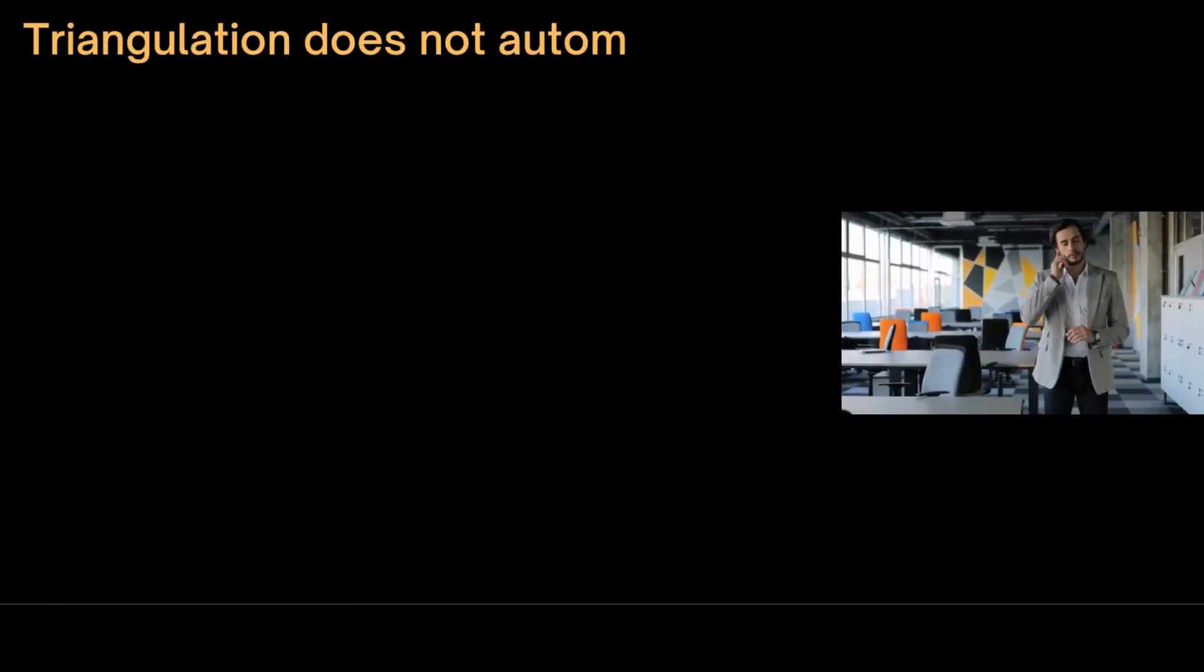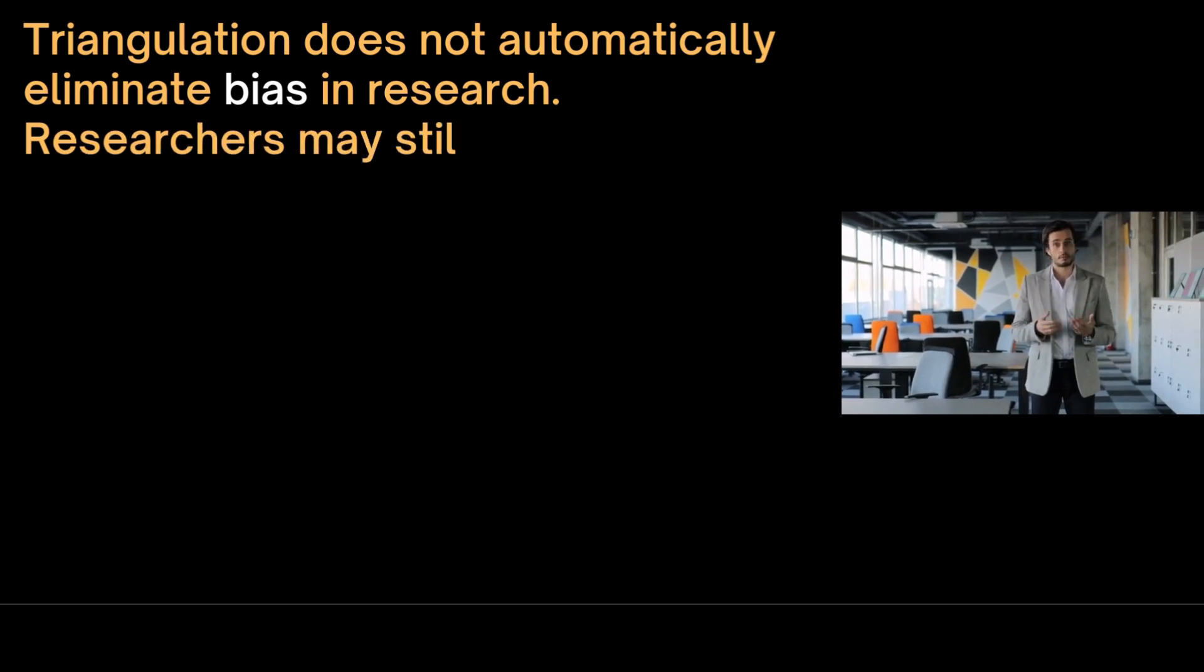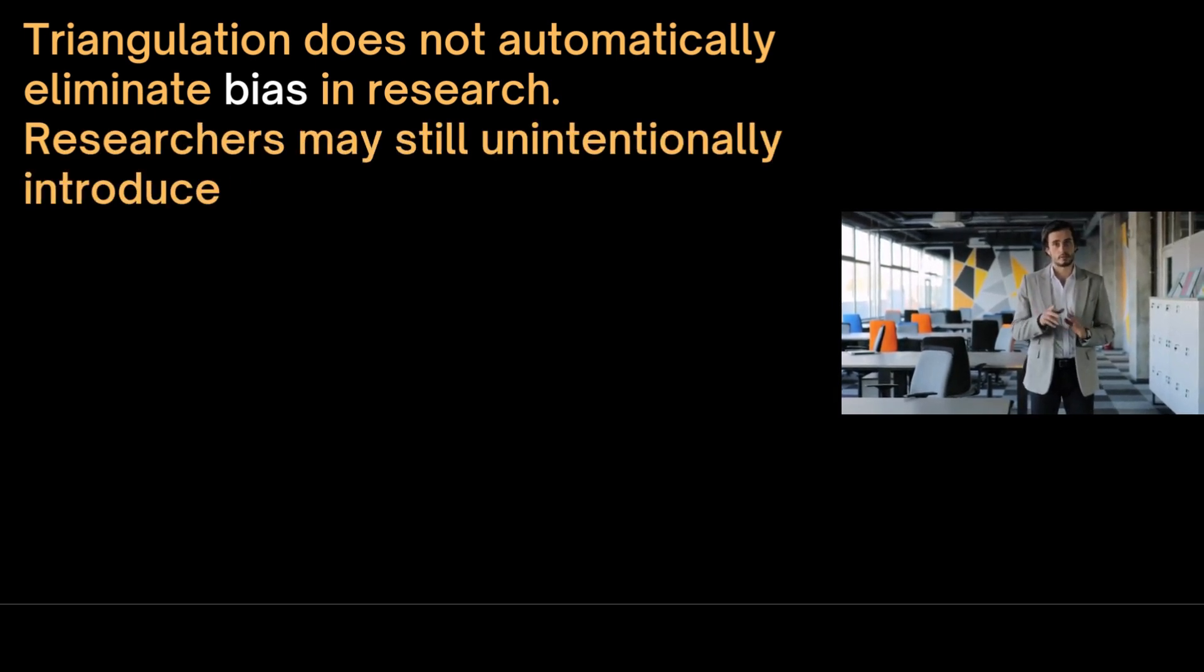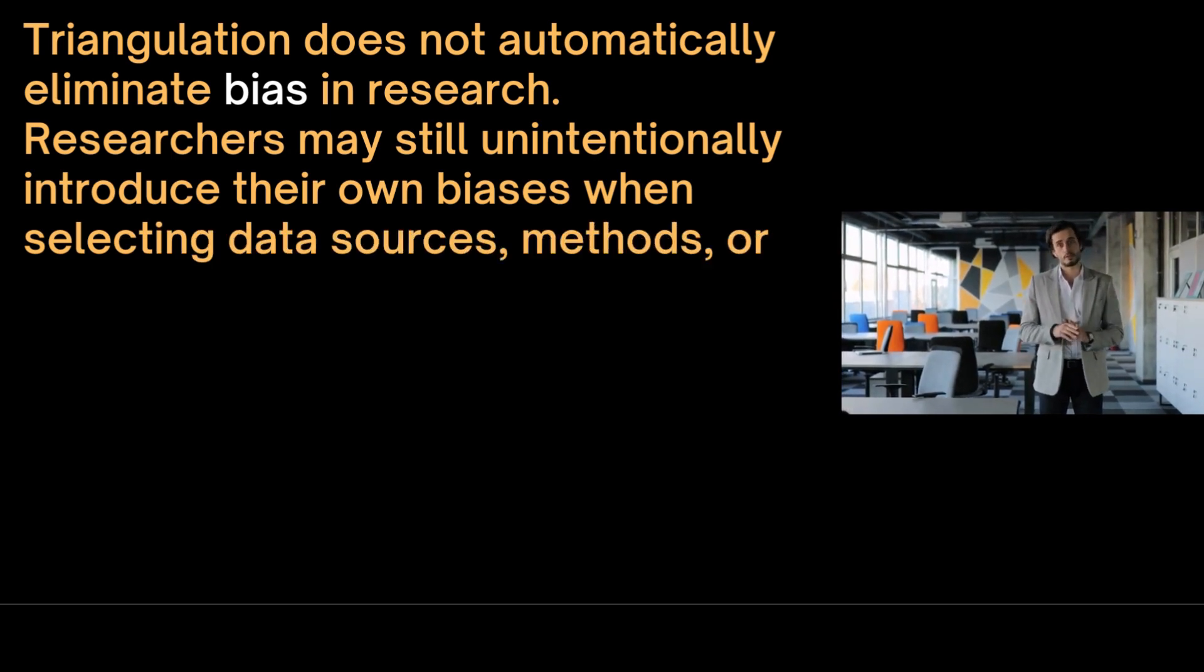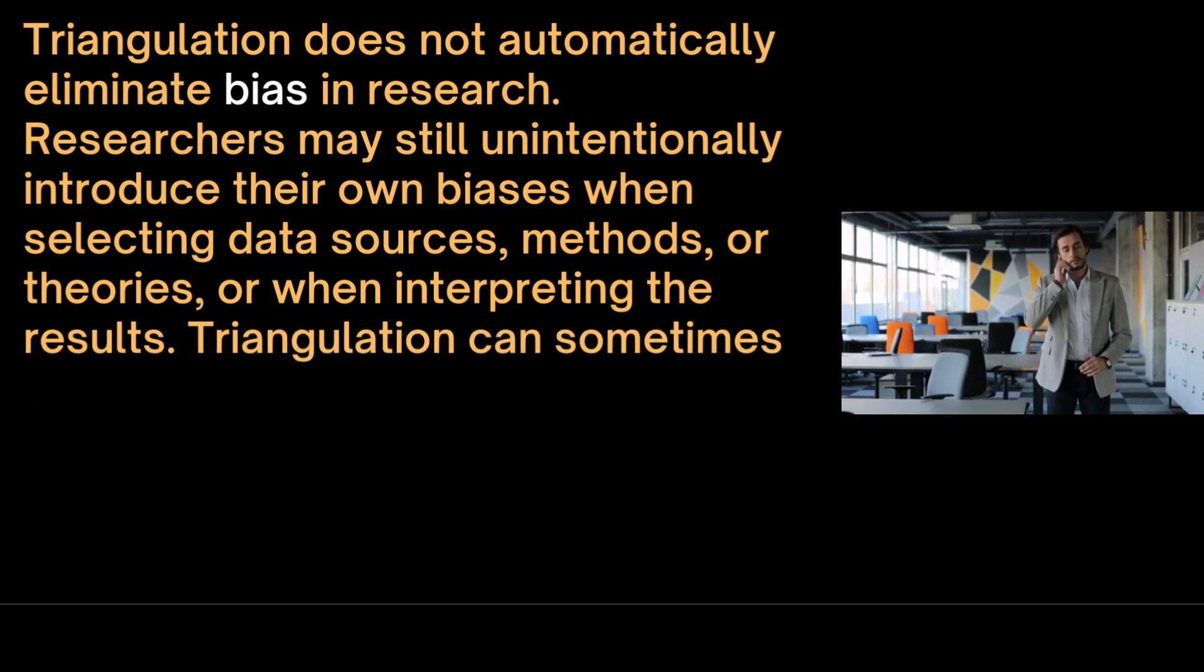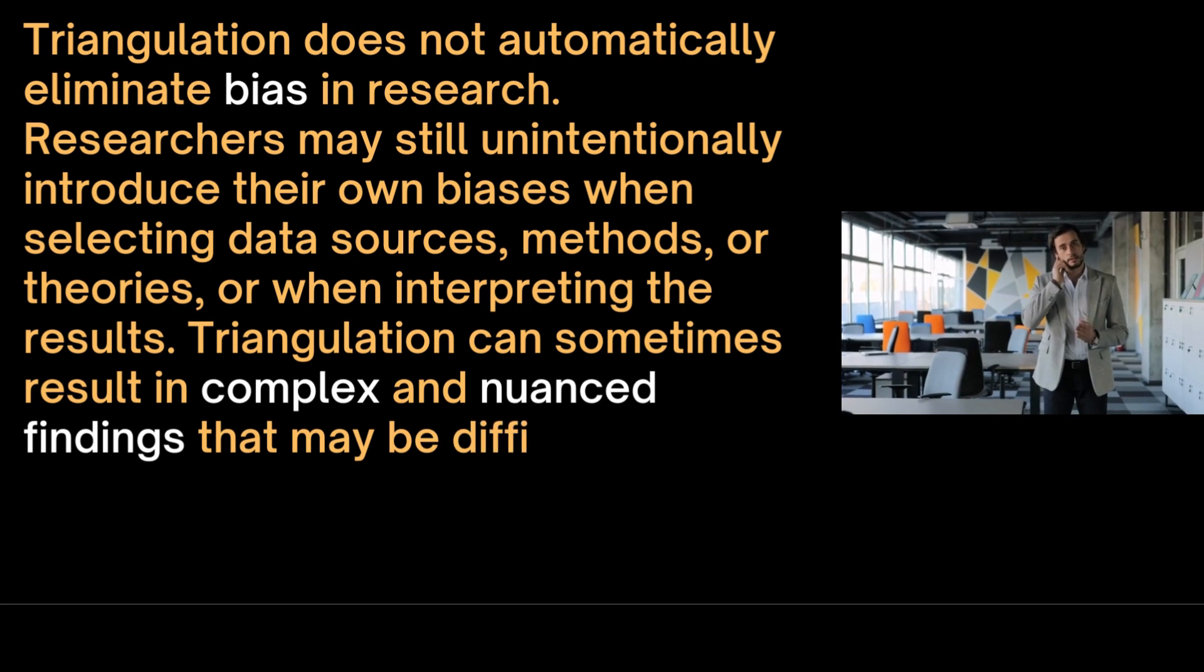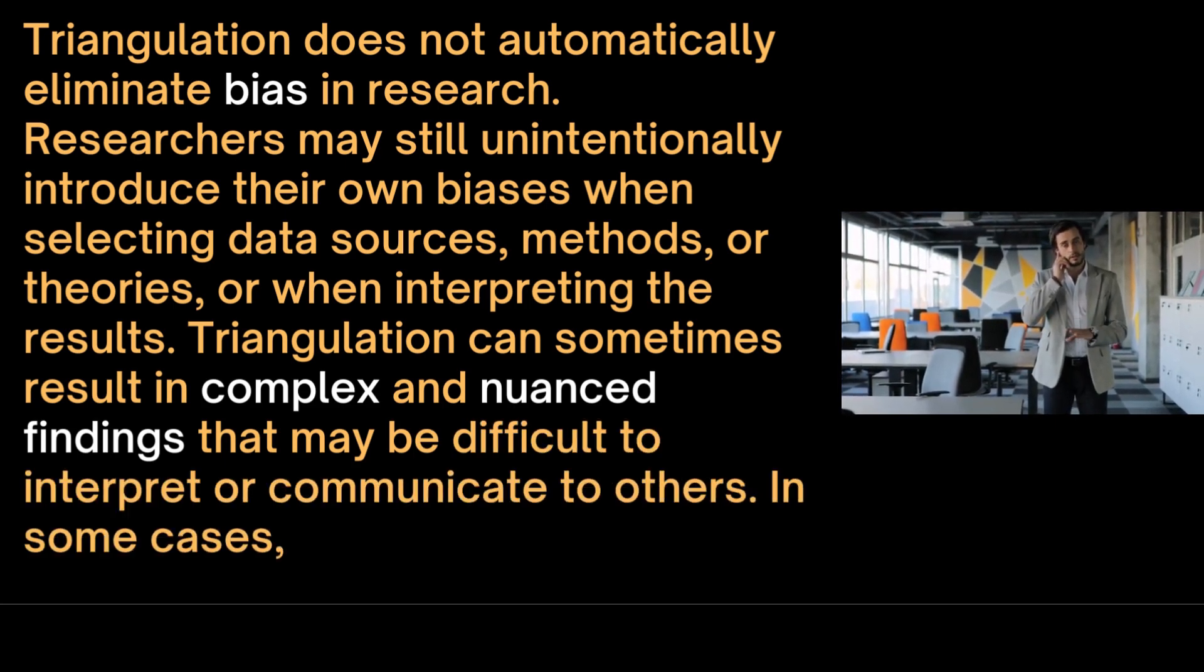Triangulation does not automatically eliminate bias in research. Researchers may still unintentionally introduce their own biases when selecting data sources, methods, or theories, or when interpreting the results. Triangulation can sometimes result in complex and nuanced findings that may be difficult to interpret or communicate to others. In some cases, the scope of the triangulation may be limited.